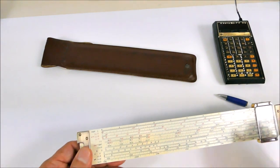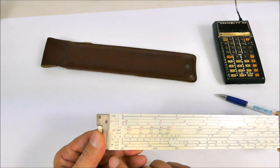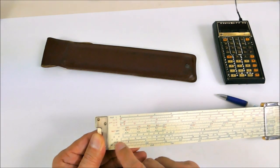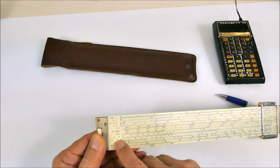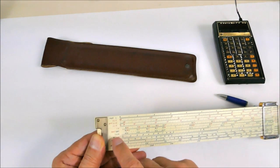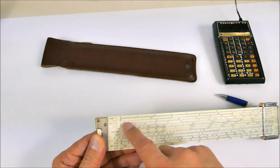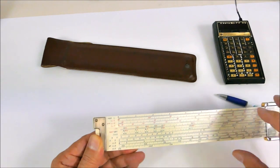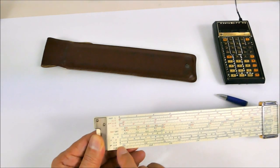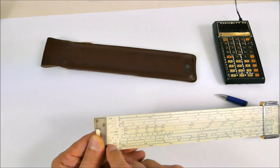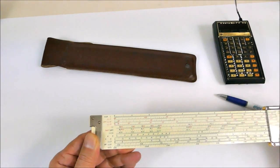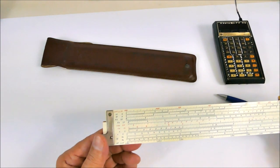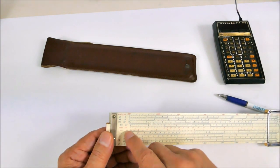Over here on the left we have markings for the different scales. To do multiplication, for example, we can use the C and D scale. There's several log scales up here, sine and cosine, more log scales, e to the X, so you can set it to X and get e to the X. On this side we have other scales, so we have still a C and a D.